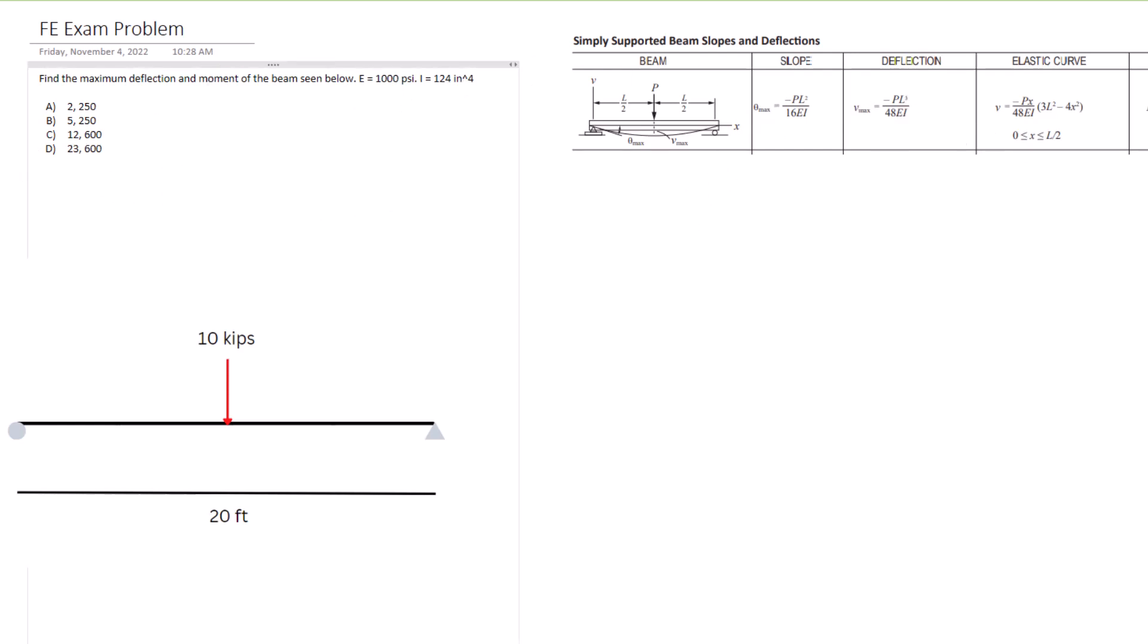Now we need to find deflection and moment. Moment looks easier to solve for first, so let's try and solve it. The max moment equals P, which is 10 kips, times L, which is 20 feet. We don't want to just use feet—all of our units are in inches, so we need to multiply it by 12 to get it into inches and then we're going to divide by 4.